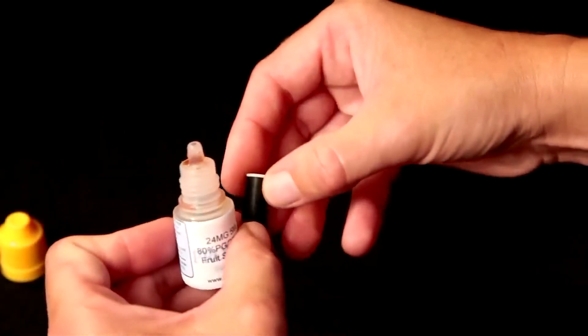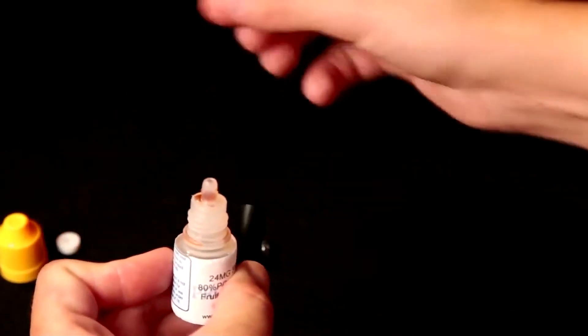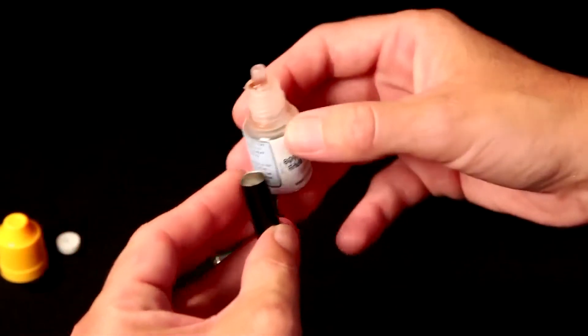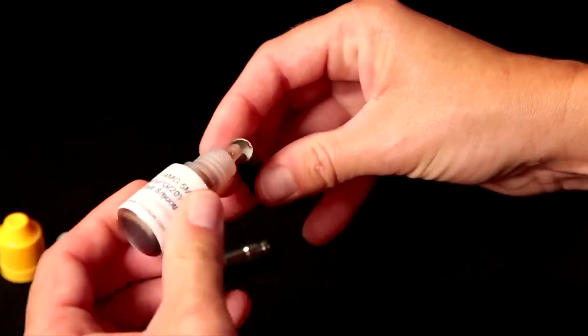To fill a cartomizer, remove the white rubber cap and tilt the cartomizer slightly on its side. Begin dripping liquid onto the filler material.